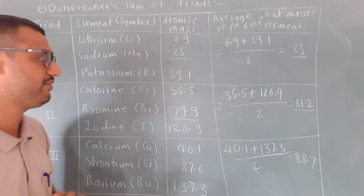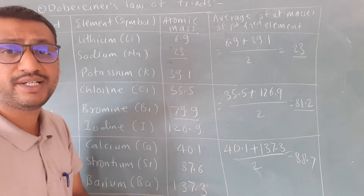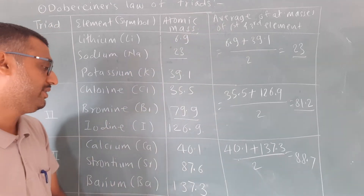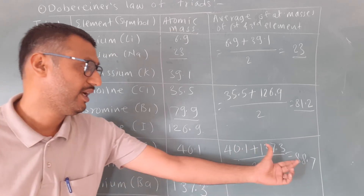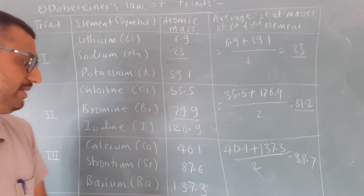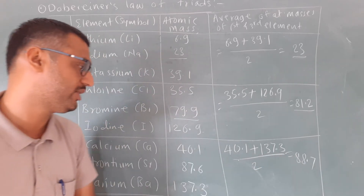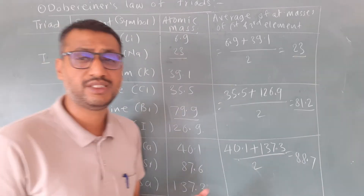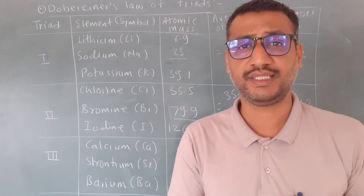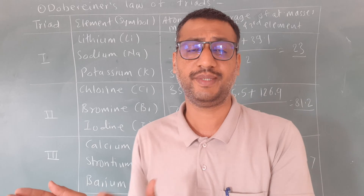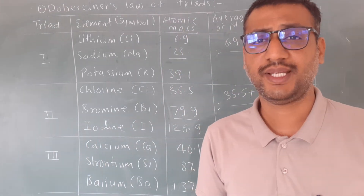Not exactly equal. Instead of the word 'average', we can use the word 'arithmetic mean.' For the third triad, the atomic mass of the middle element strontium is 87.6, and the average of the first and last element's atomic mass is 88.7. So this is about Dobereiner's Law of Triads — that relationship between the atomic masses of elements and elements with similar properties, given by Dobereiner.